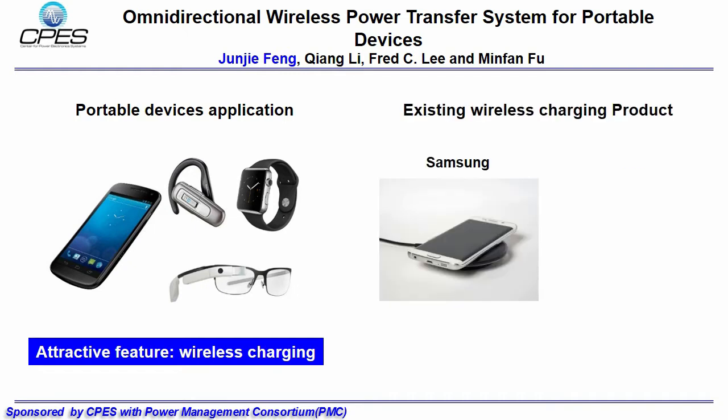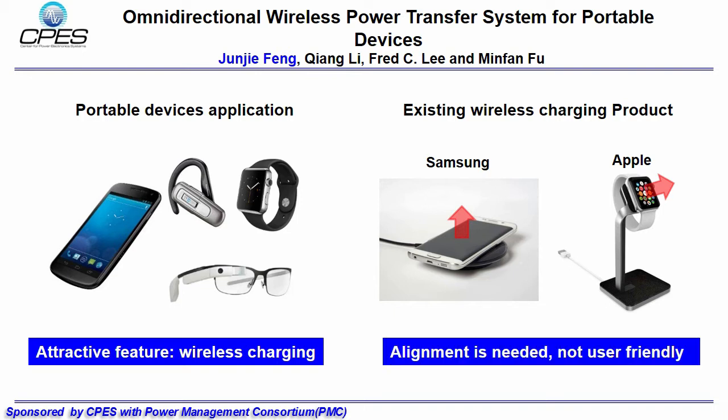Up to now, wireless charging products in market are directional systems, such as Samsung and Apple's charging pad. The magnetic field induced by this pad is perpendicular with the surface. The receiver devices must be perpendicular to the field to gather efficient charging, which means alignment is still needed in their system, which is not user-friendly.